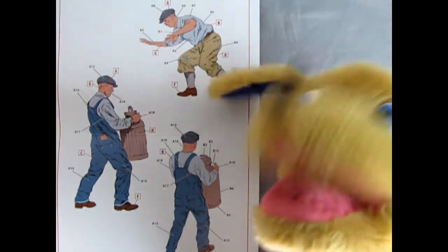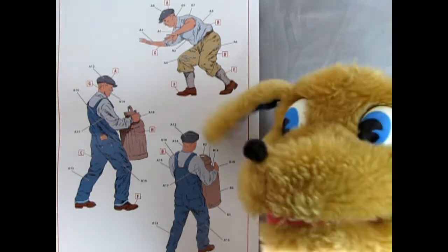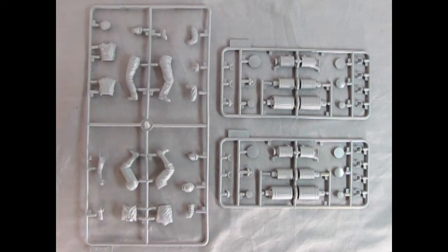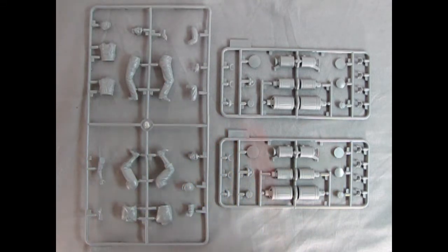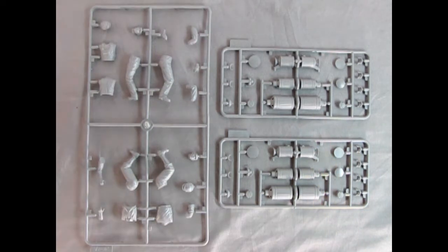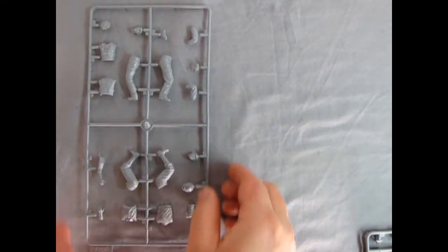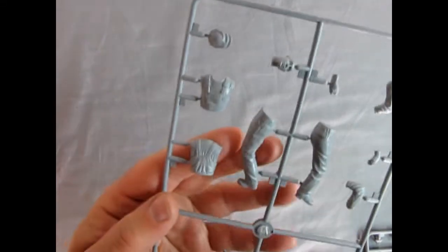As Danny was showing us in the instructions, here's our three parts trees. This one is A and then we've got two of B. B is of course the gasoline fuel tanks from back in the day. Let's move these out of the way and take a look at all the nice detail here.